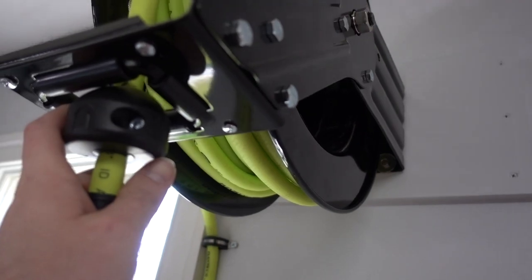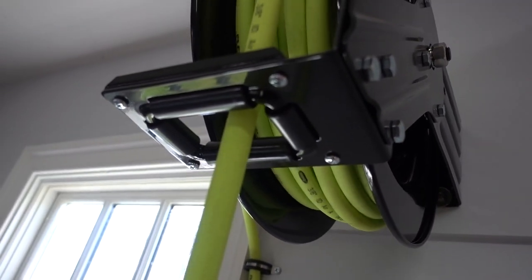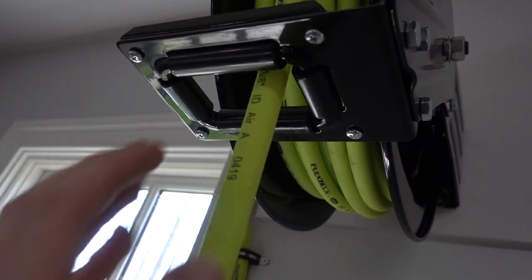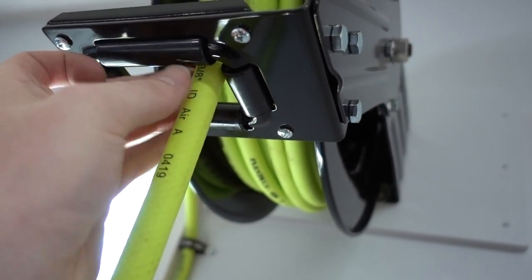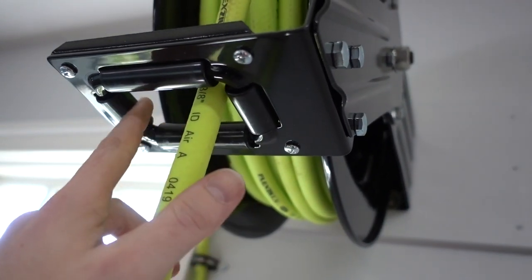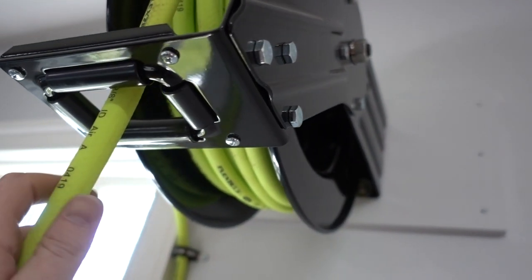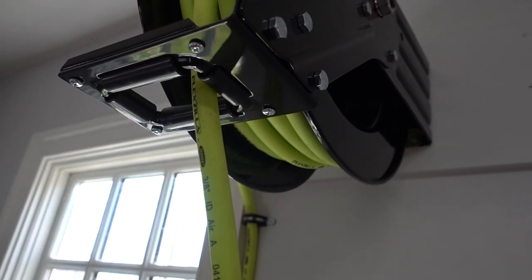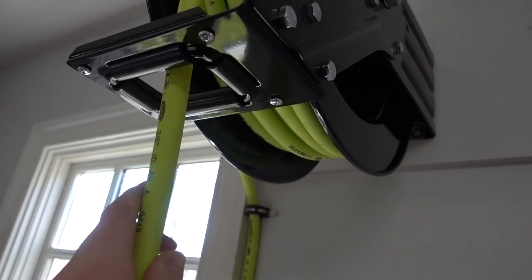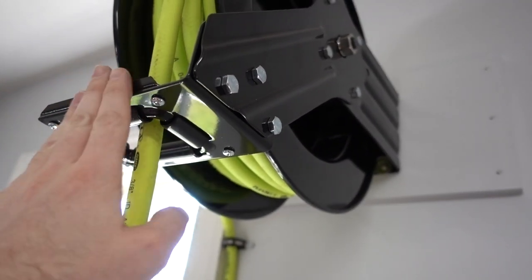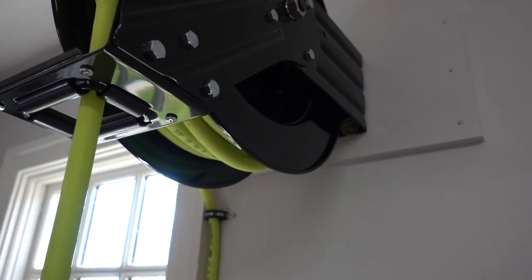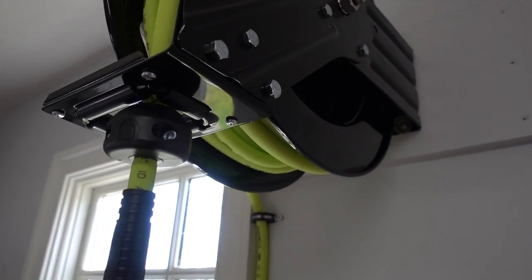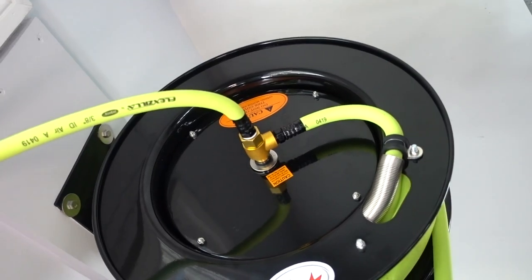Okay, so this hose reel comes with these rollers here. They're just plastic, but it has four rollers, one here, here, and here. And then it allows you when you pull out the air hose, it allows you to not be rubbing the hose on just stationary metal, possibly giving you some more longevity.